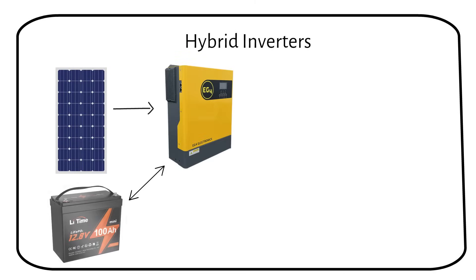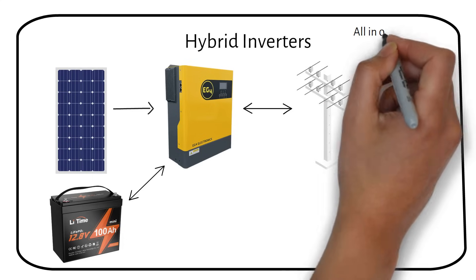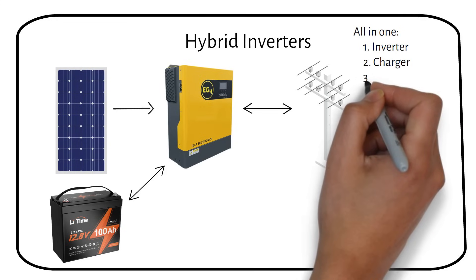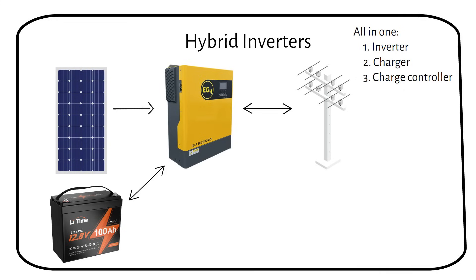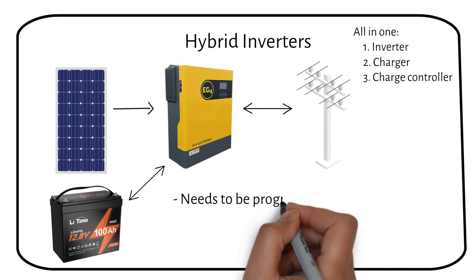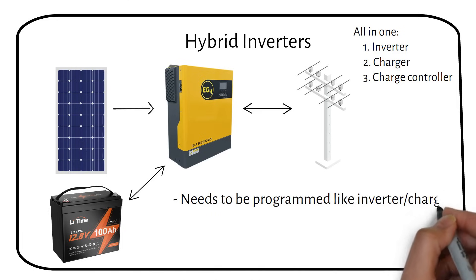A hybrid inverter combines the function of an inverter charger with an added charge controller, making it a versatile component for both grid-tied and off-grid solar systems. This all-in-one solution simplifies setup and reduces the need for extensive wiring, making it an ideal choice for installations where simplicity and space efficiency are priorities. Compared to assembling a system with separate devices, hybrid inverters offer a more compact alternative, often resulting in cost savings. They are designed to facilitate a seamless transition between grid and battery power, ensuring continuous electricity supply without interruption.